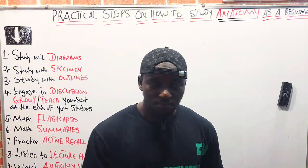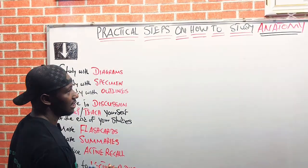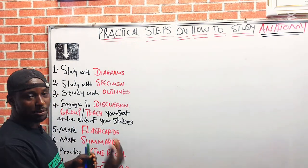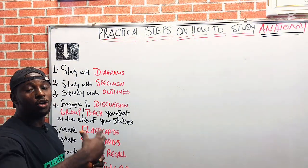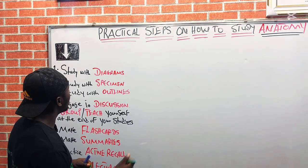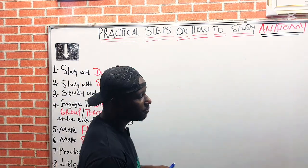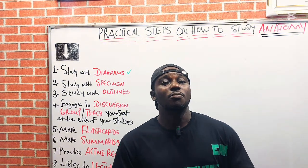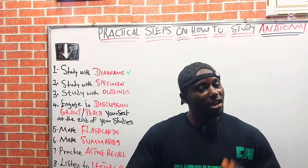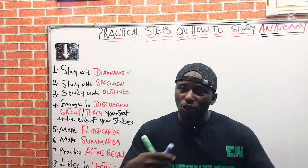Now let's proceed. These are the steps that we shall be explaining — a kind of steps that you should take in your course of reading anatomy as a beginner. First of all is studying with diagrams. You have to study with diagrams. Everything in human anatomy has diagrams and structures. So first of all, when you approach a topic, endeavor to know the diagram you are studying on that topic.